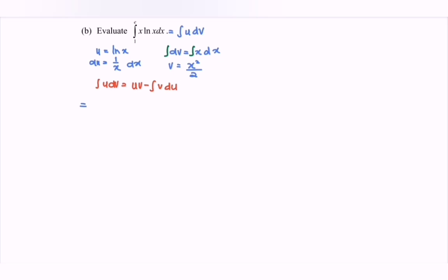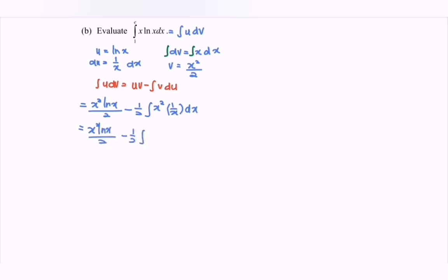Substituting, uv gives x squared ln x over 2, minus we have 1 over 2 times the integral of x squared multiplied by 1 over x dx. Rewriting the situation, we have ln x multiplied with x squared over 2, minus 1 over 2 times the integral of x dx. Integrating gives x squared over 4, with limits e and 1.